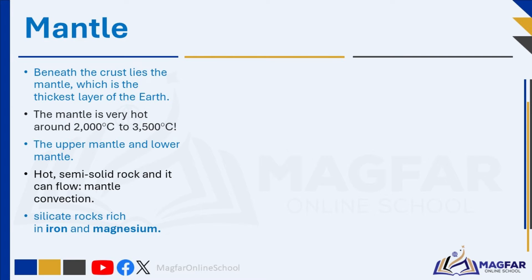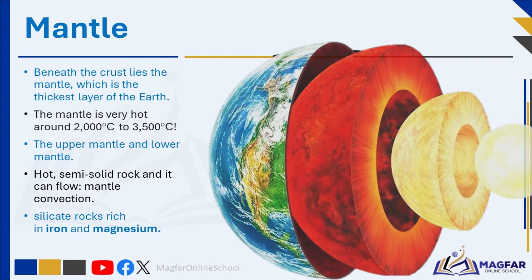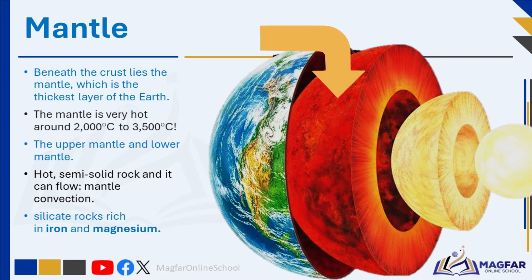Beneath the crust lies the mantle, which is the thickest layer of the Earth. The mantle is very hot, around 2000 to 3500 degrees Celsius. The mantle can be divided into two sections: the upper mantle and lower mantle. It is made of hot, semi-solid rock and can flow over long periods of time, resulting in what is known as mantle convection. Mantle convection plays a crucial role in driving plate tectonics and other geological processes. The mantle contains silicate rocks rich in iron and magnesium.